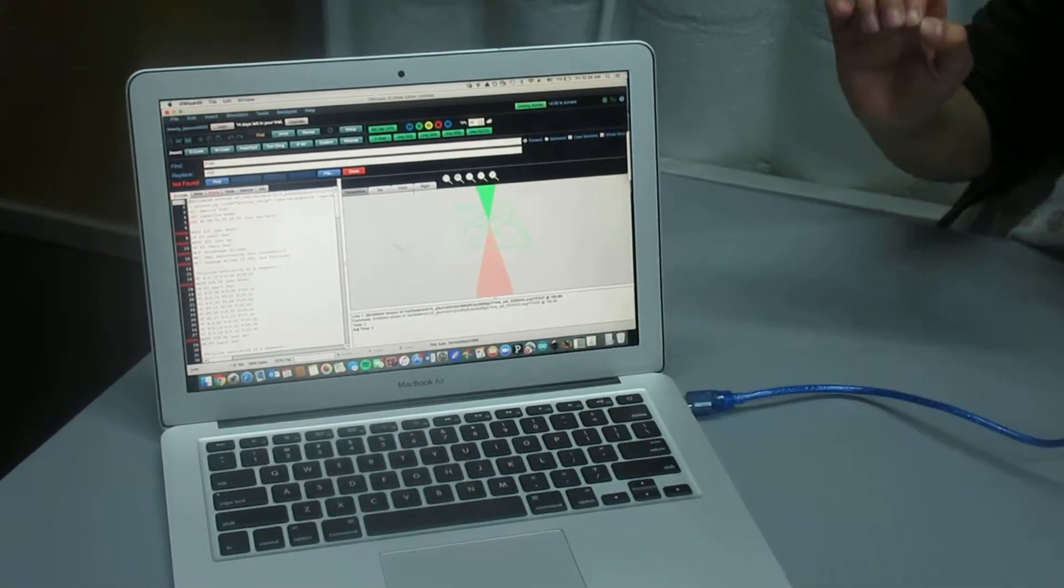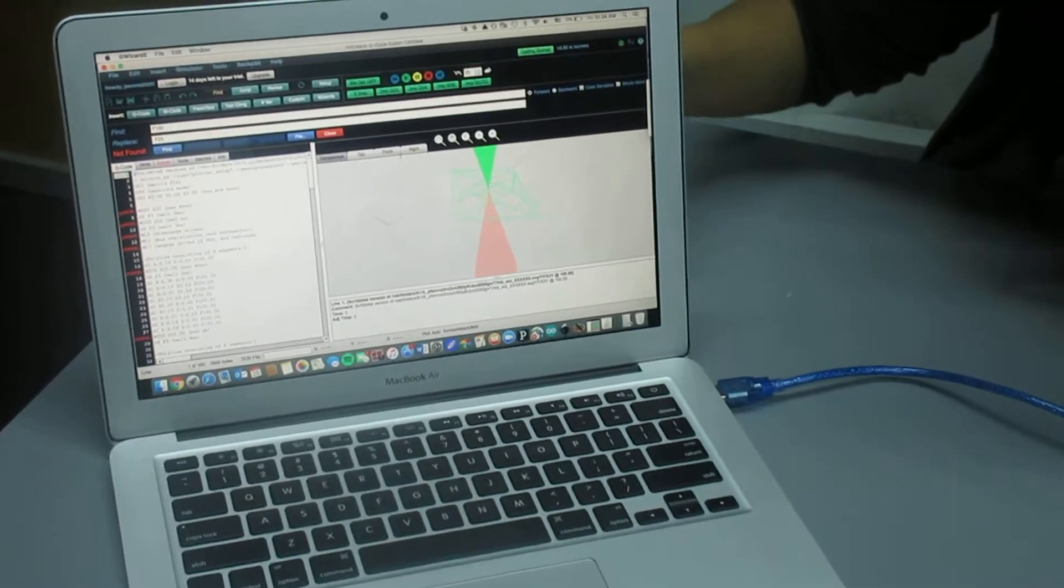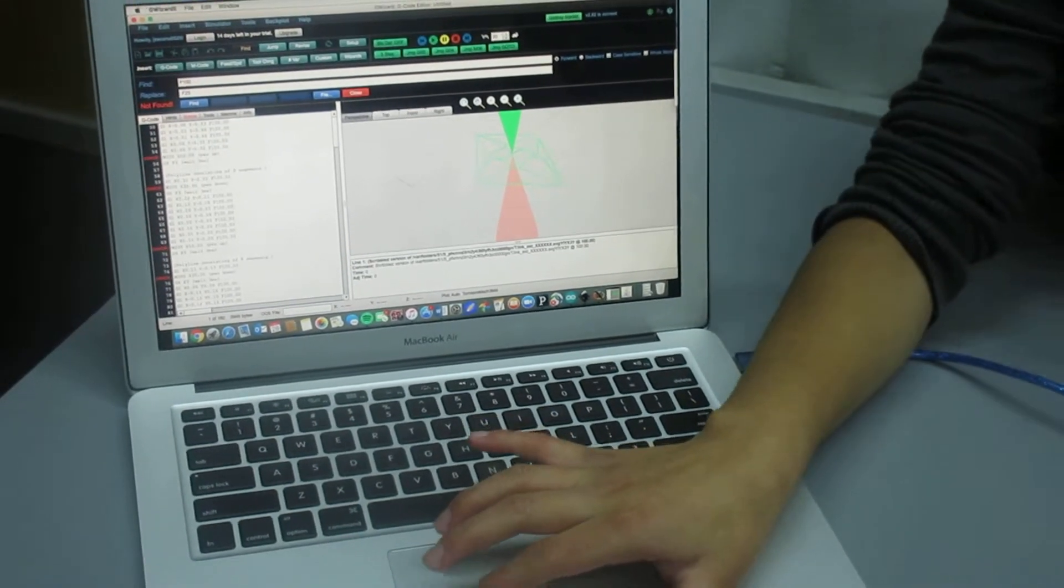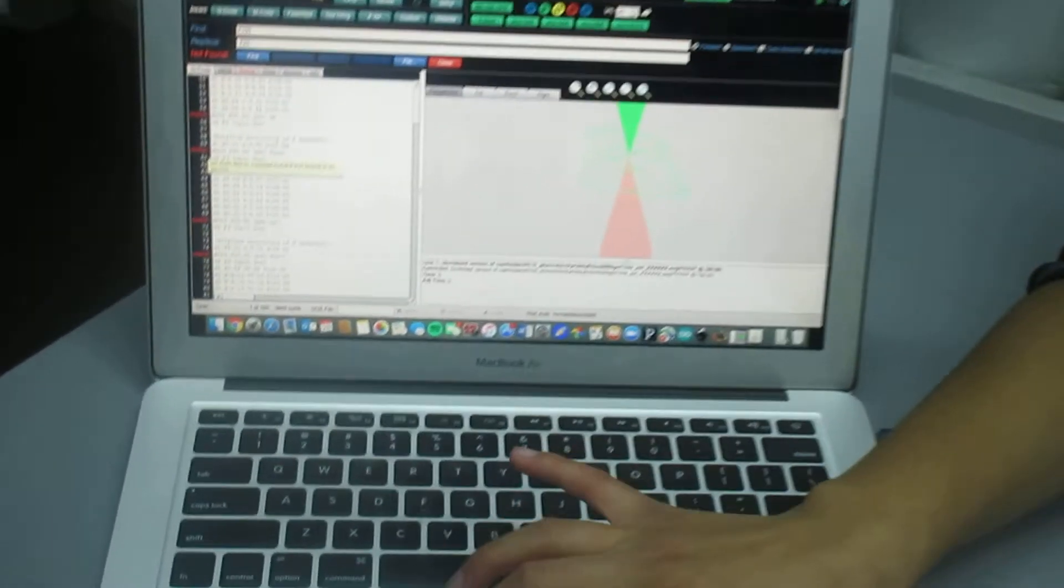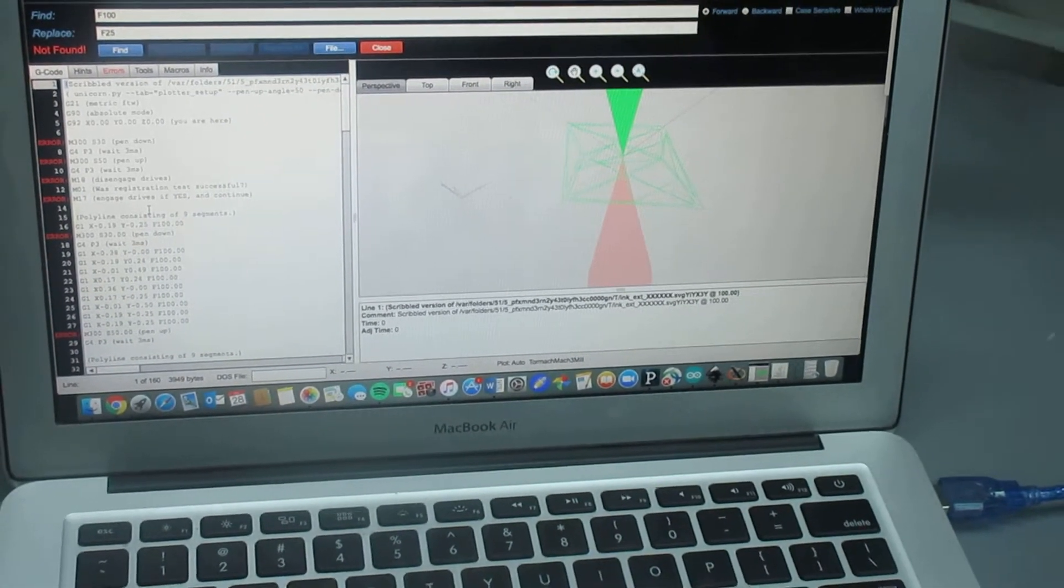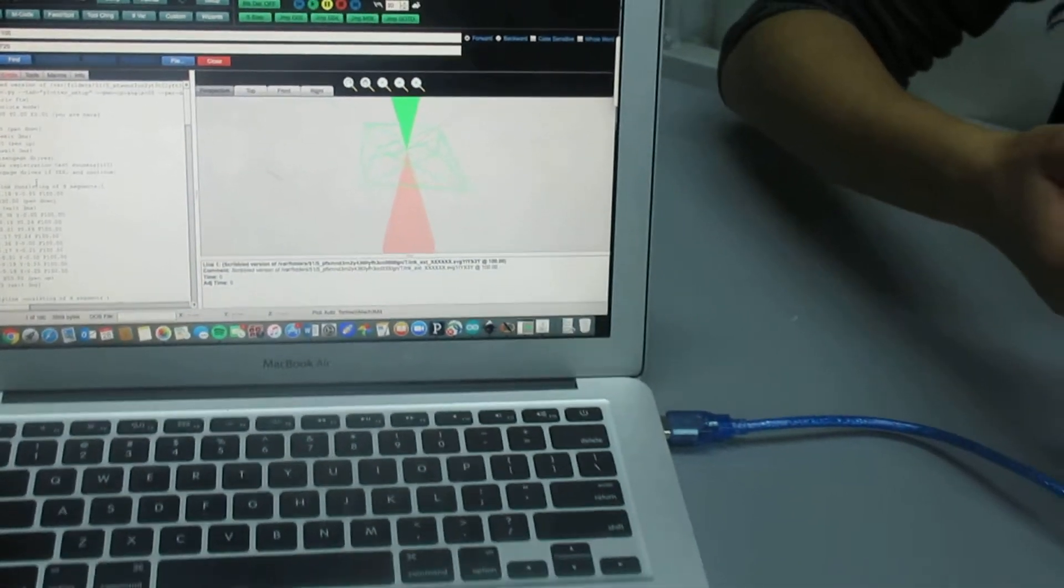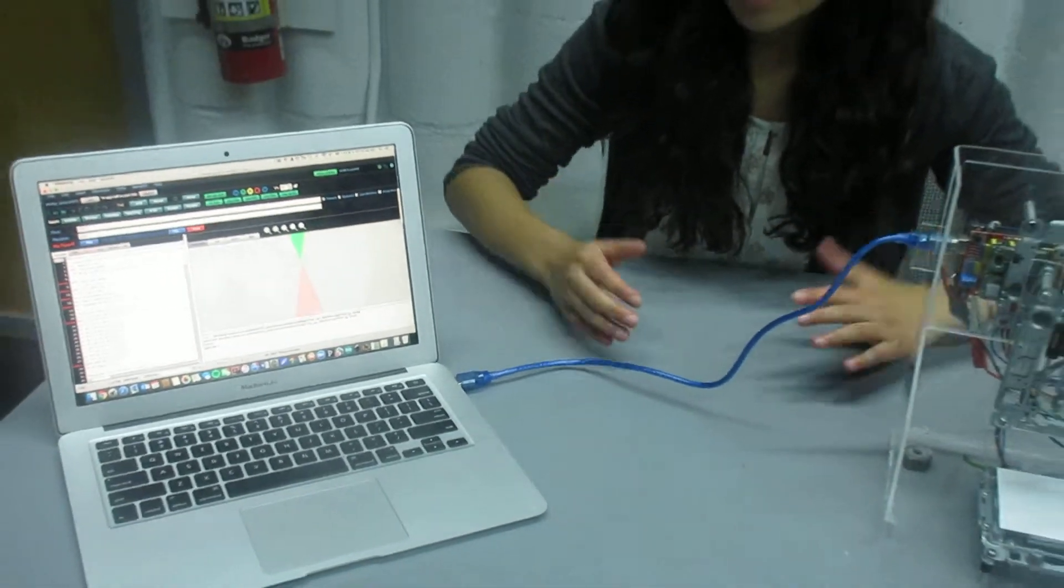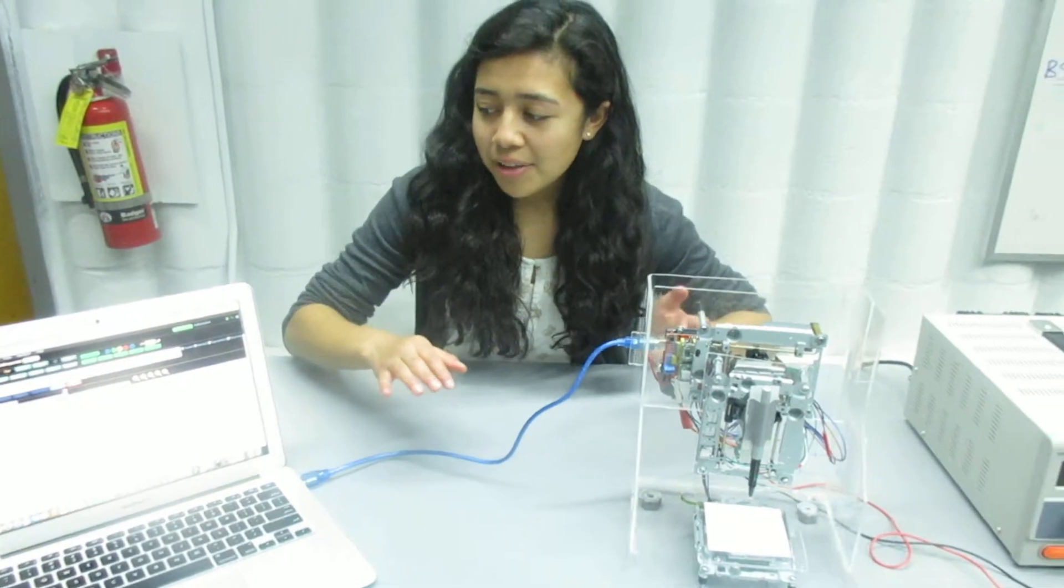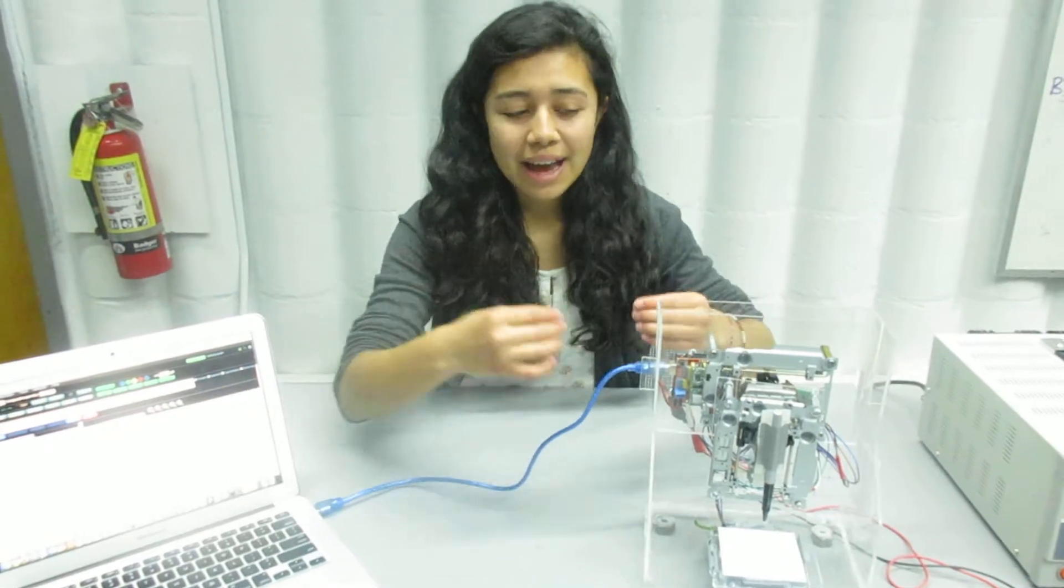Once it's ready, I import that file into this program called G-Wizard, which lets me edit all the lines of G-code individually. As you see, there are a few errors in this file right here since it includes lines of M-code, which my machine can't understand. M-code is basically like G-code but it's used for larger scale industrial CNC machines. I have to go line by line and translate those M-code instructions into G-code. I also slow down the pace at which the motors move so that it's slow enough for my machine to draw accurately.